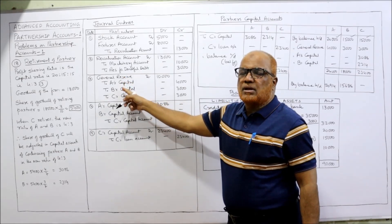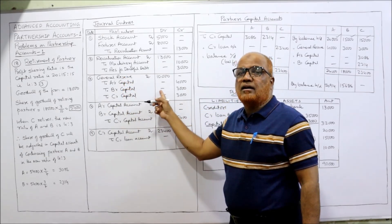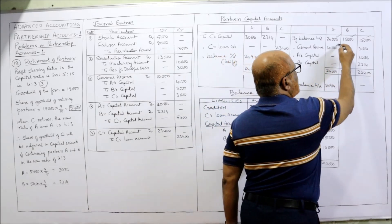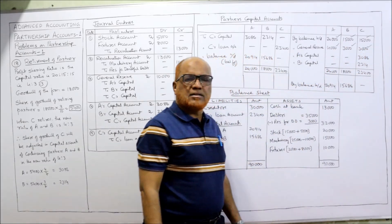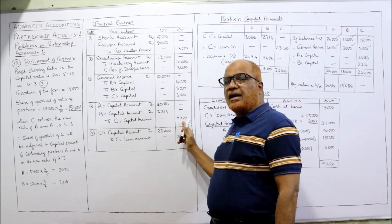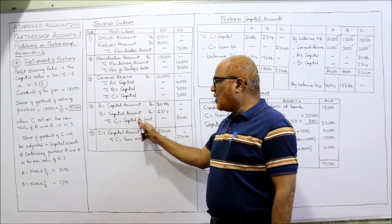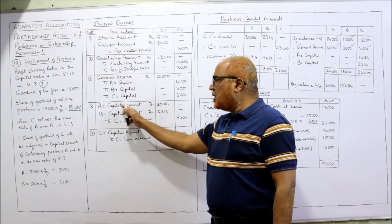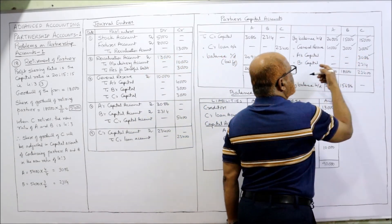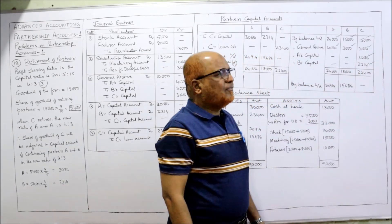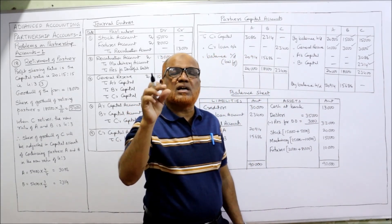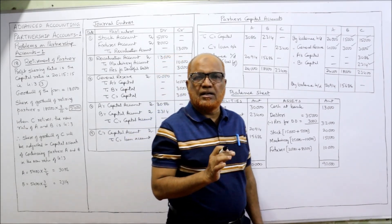Adjustment of goodwill: C's account is credited by 5,400 — shown as A's capital 3,086 and B's capital 2,314 on the credit side of C's account (totalling 5,400). For continuing partners A and B, the debit side shows C's capital: A column 3,086, B column 2,314. The total on the credit side of C's account is 23,400, which is transferred to his loan account — C's capital account is now closed.